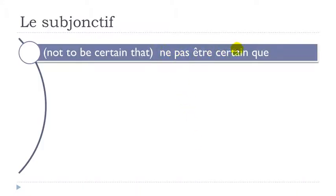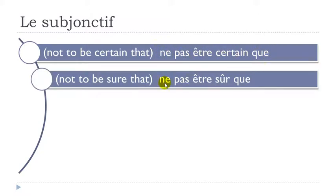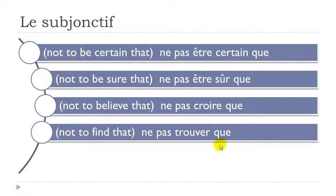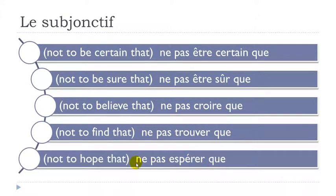Ne pas être certain que. Ne pas être sûr que. Ne pas croire que. Ne pas trouver que. Ne pas espérer que. To review: ne pas être certain que, ne pas être sûr que, ne pas croire que, ne pas trouver que, ne pas espérer que — all should be followed by le subjonctif.